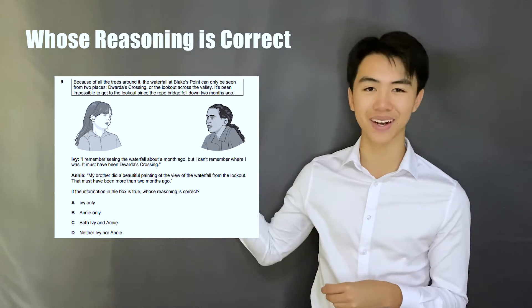Hello everyone, it's your favourite thinking skills expert here, back again with another topic tutorial. In today's video we're going to be going through a very famous type of thinking skills question that showed up in last year's OC and selective, and will very likely show up in future years to come. I'm talking about, of course, whose reasoning is correct.